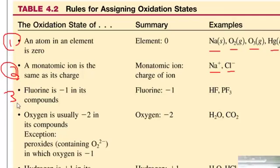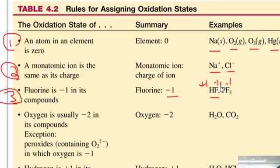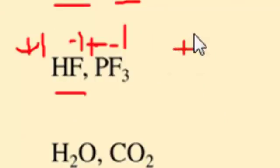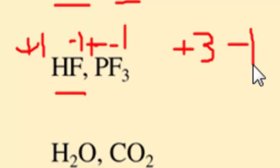Rule number three: fluorine is always negative one in its compounds. If you have HF, fluorine is negative one and hydrogen is positive one. In PF₃, each fluorine is negative one, so phosphorus must be positive three to balance the negative three. In AlF₃, aluminum is positive three and each fluorine is negative one.